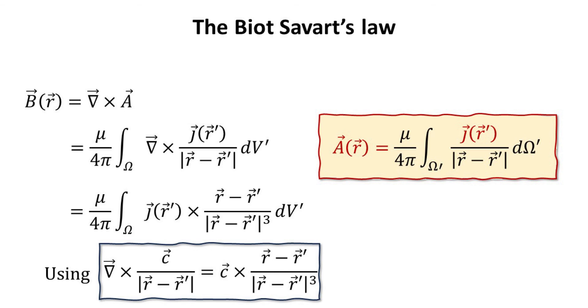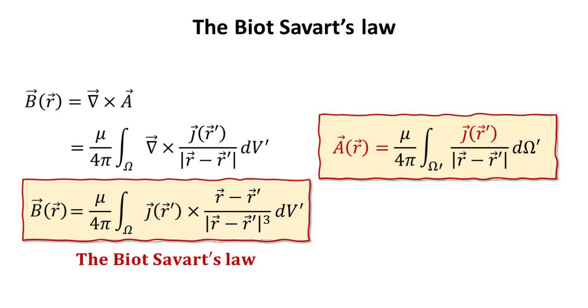Note that the curl is with respect to r and not r prime. This can be easily evaluated using the identity as shown, which we will provide a brief note at the end of the video. Thus, we obtain the well-known Biot-Savart's Law in magnetostatics.